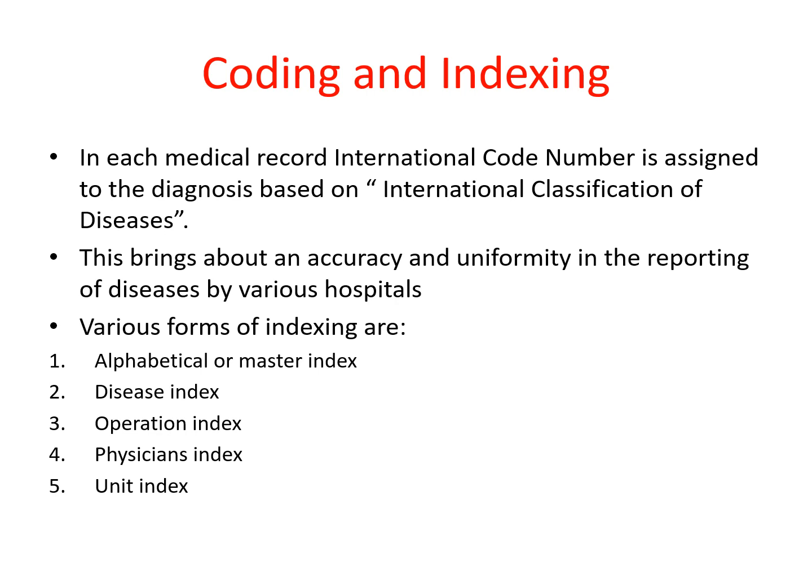This brings about accuracy and uniformity in the reporting of diseases by various hospitals. Various forms of indexing include alphabetical index, disease index, operational index, and physician index.